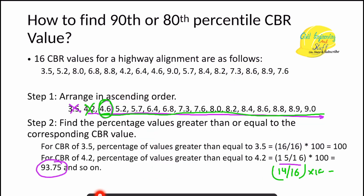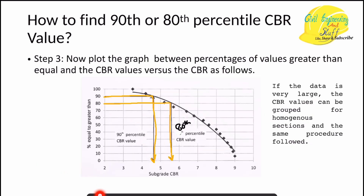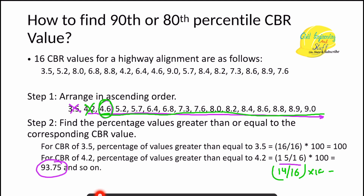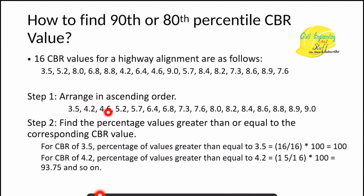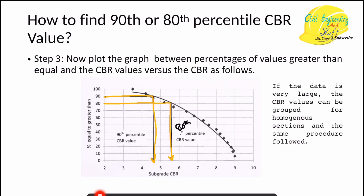The code also notes that for very long roads — 100 or 200 kilometers — the dataset will be large. In that case, CBR values can be grouped together: if many samples give values like 4.1, 4.2, 4.25, and 4.6, these can be clubbed, an average value taken, and the same procedure followed to find the 90th and 80th percentile CBR values.